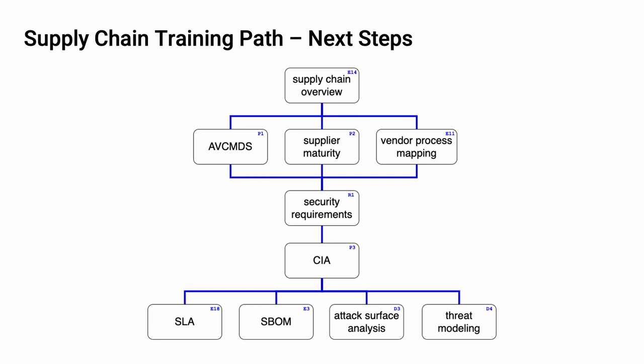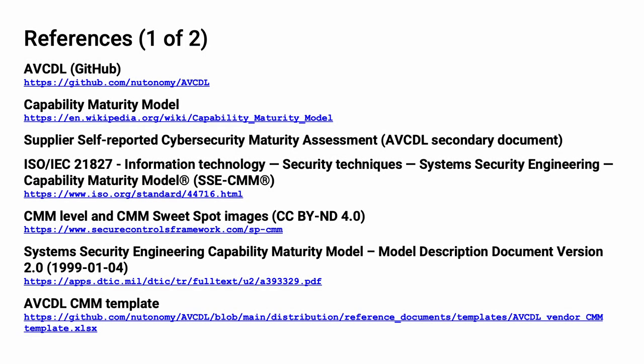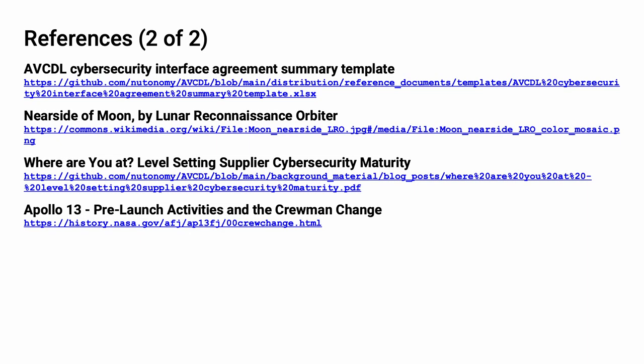The next step in this training sequence is to complete the other two courses at this level if you haven't already. The AVCMDS training covers the supplier's cybersecurity manufacturer disclosure statement. The vendor process mapping training covers how to take established vendor processes and map them to their corresponding AVCDL processes, helping to ensure that no gaps exist between the vendor and the customer in the area of cybersecurity. Once the three trainings at this level are complete, you should proceed to the security requirements training. Here are the references to the source material used in the creation of this presentation; they'll also be included in the video description, and this presentation source material will be provided in the AVCDL GitHub repository.